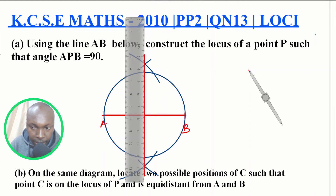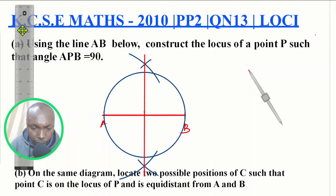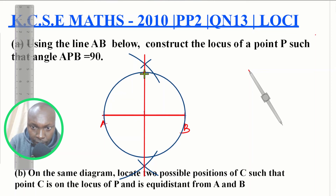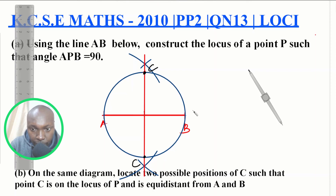Point C must be on the locus of P, which is the circumference of the circle, and also equidistant from A and B, which is the perpendicular bisector. So point C will be at the intersections of the perpendicular bisector with the circle. There will be two positions of C: the first intersection here and the second one here. Both points are equidistant from A and B and lie on the locus of P. That is how you solve this question. Thank you.